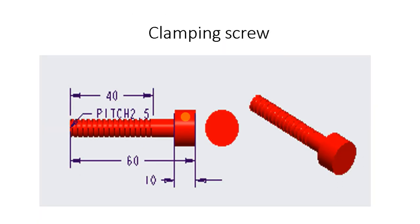The clamping screw is used to clamp the component. Generally, the clamping device is used to rigidly hold the component against the cutting force. A clamping screw of M8, which is a metric thread of 8 mm diameter, is used. The length of the clamping screw is 60 mm, and a 40 mm length thread of 2.5 mm pitch is used.